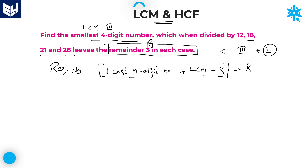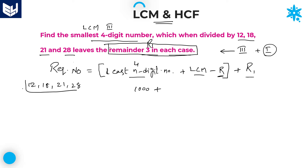Since we are looking for the least four-digit number, the least four-digit number is 1000. Next, we need to calculate the LCM of 12, 18, 21, and 28.